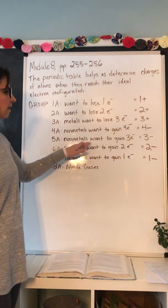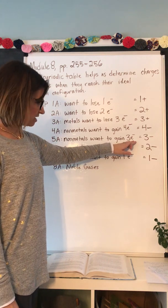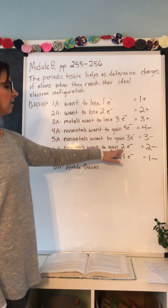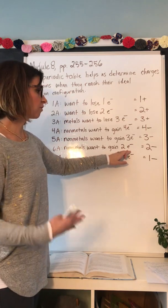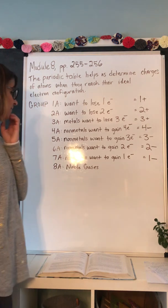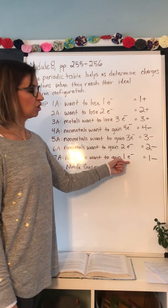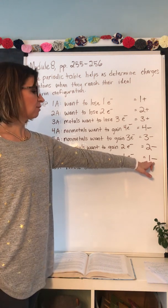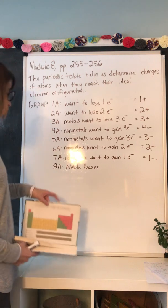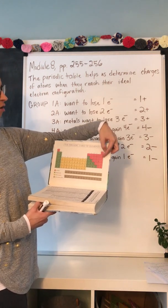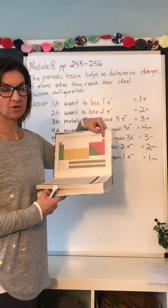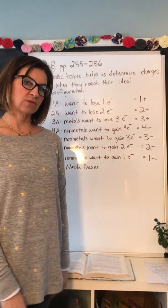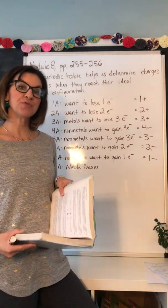In group 5A, the non-metals want to gain three electrons; when they do, they have an overall charge of 3-. In group 6A, the non-metals want to gain two electrons, giving them an overall charge of 2-. Group 7A non-metals want to gain just one electron because they already have seven valence electrons — they just need one more, giving them a 1- charge. Group 8A, the noble gases, already have a full outermost orbital and are completely satisfied with their eight electrons.